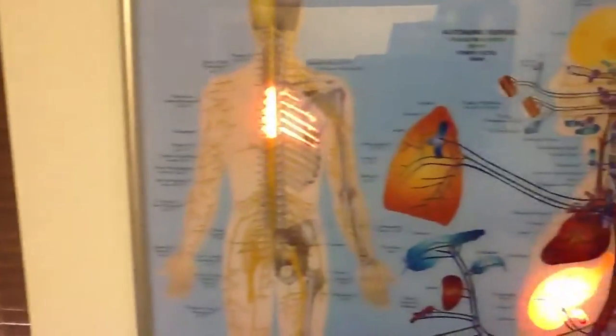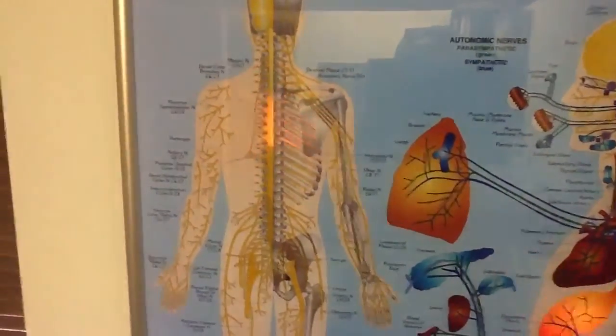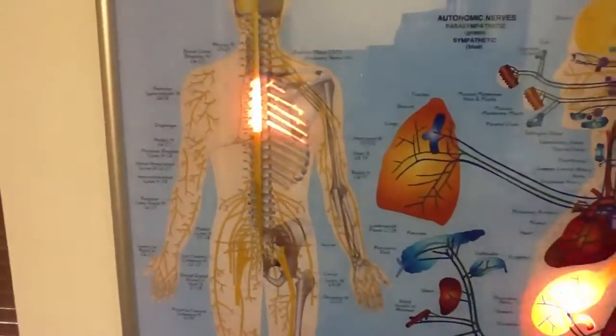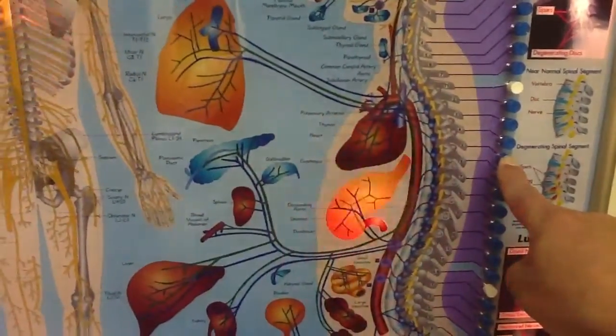Some of the areas that can be affected are the upper thoracic mid-back to the shoulder blade and ribs, but also the stomach and the duodenum.